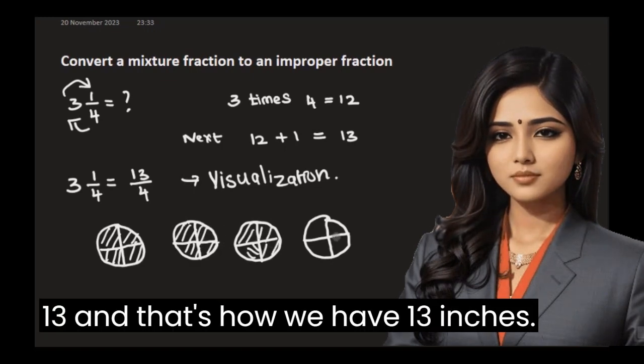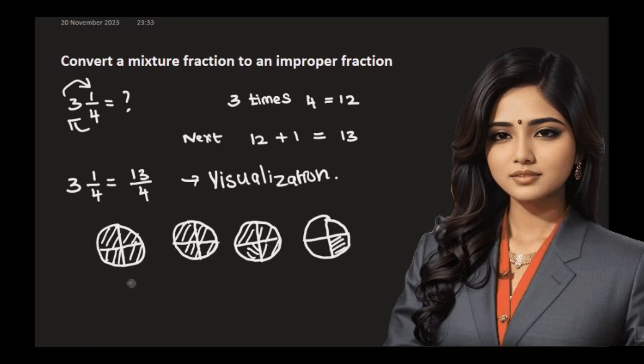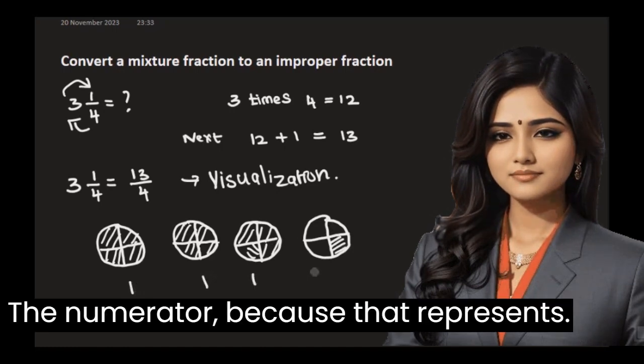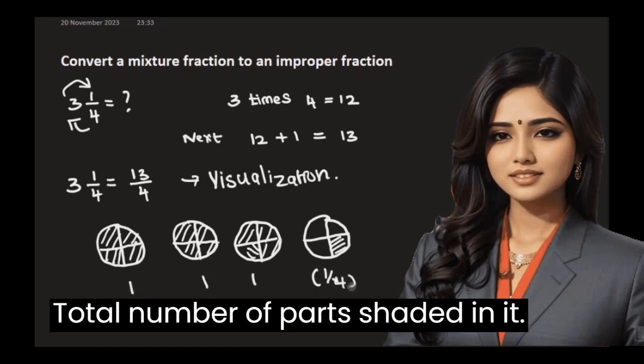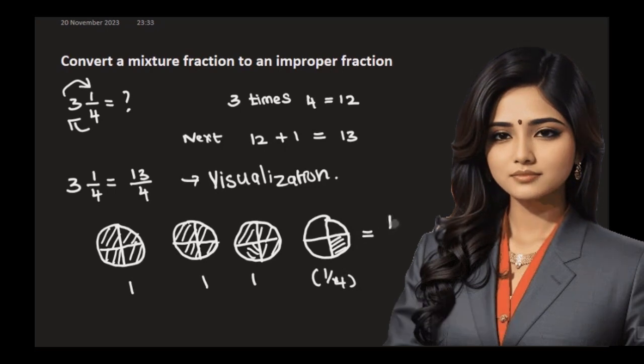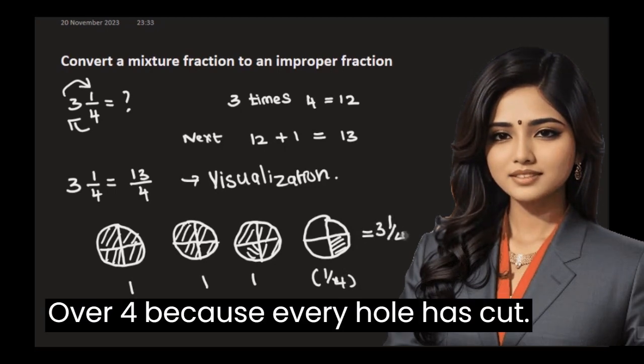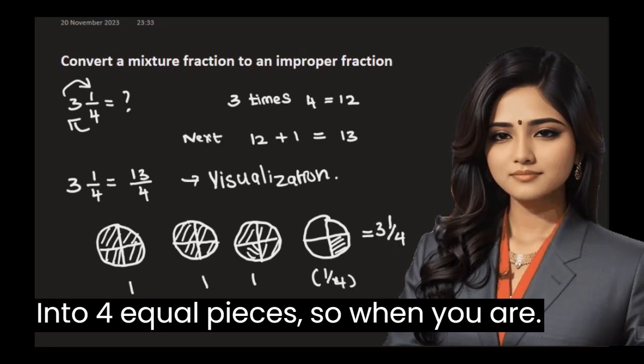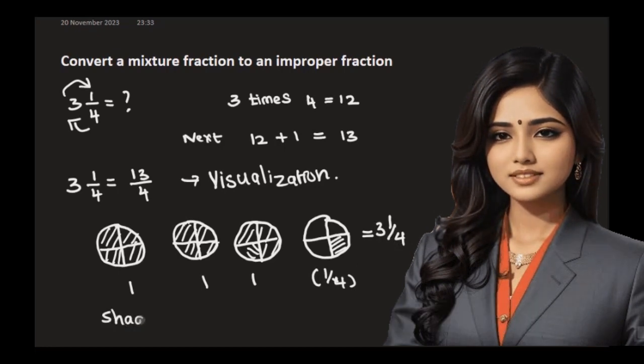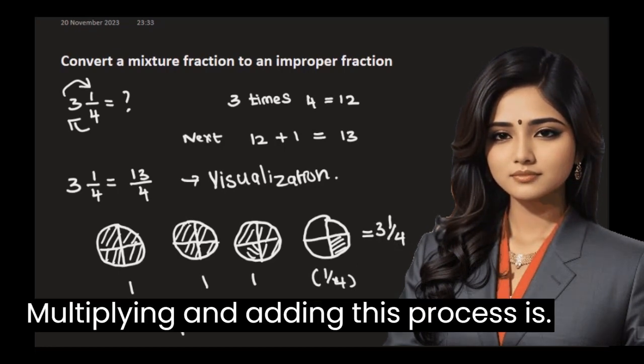13. And that's how we have 13 as the numerator, because that represents the total number of parts shaded. And it's over 4 because every whole has been cut into 4 equal pieces. So when you are multiplying and adding, this process